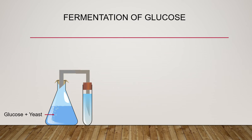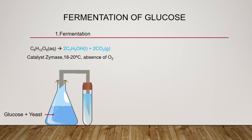First, yeast is added into the glucose source, which can be starch or sugar. It is left in a warm place for several days in the absence of air, because fermentation is anaerobic — it takes place in the absence of oxygen. Yeast produces a biological enzyme called zymase, which acts as a catalyst and slowly decomposes the glucose to form ethanol and carbon dioxide. The drawback of this method is that when the concentration of ethanol reaches 15%, the yeast is killed off, so pure ethanol is not produced.